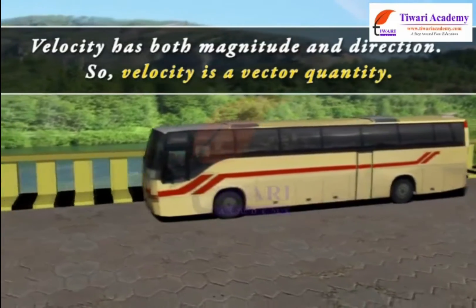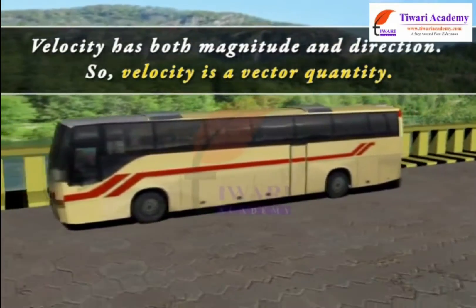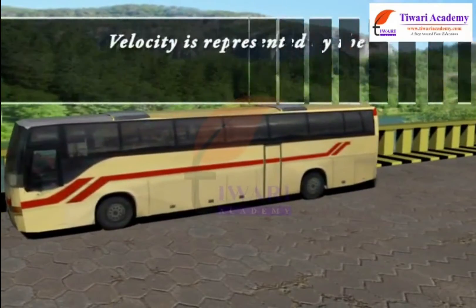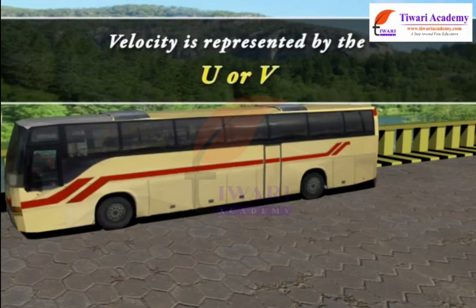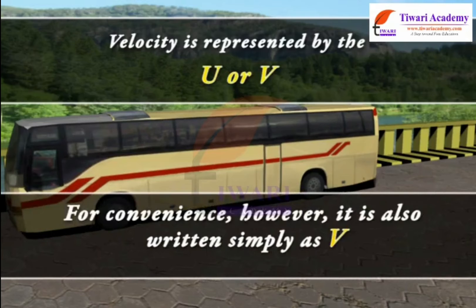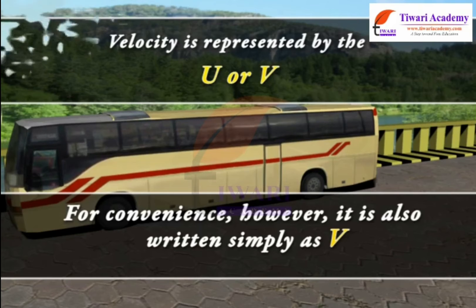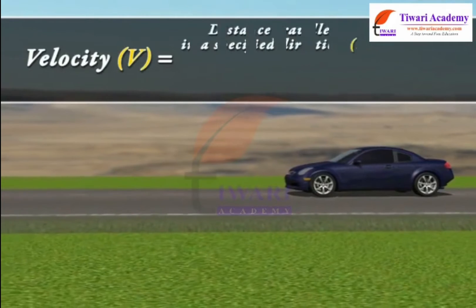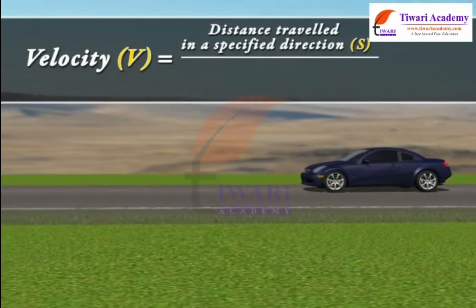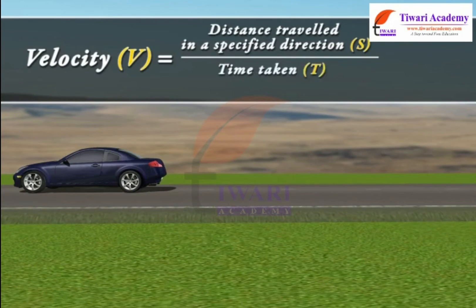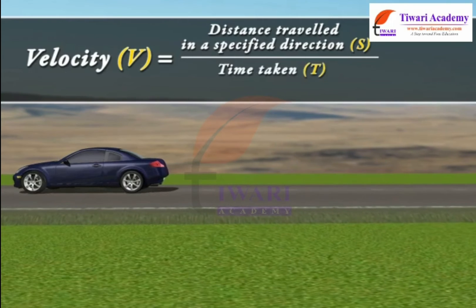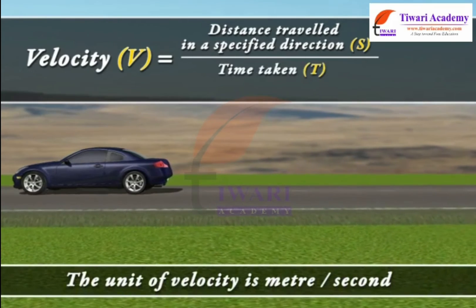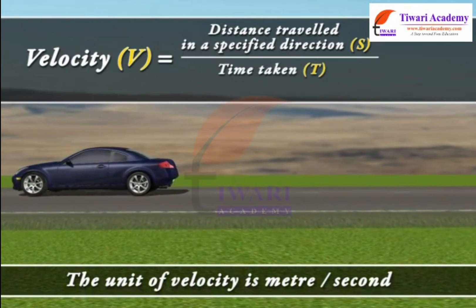So, velocity is a vector quantity. It is represented by U or V. For convenience, it is also written simply as V. Velocity is equal to distance traveled in a specified direction divided by time taken. In the SI system, the unit of velocity is meter per second.